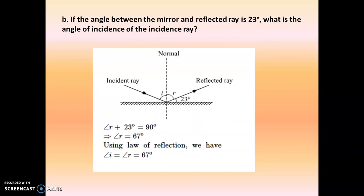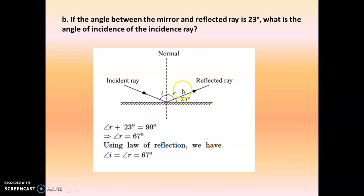Again: if the angle between the mirror and the reflected ray is 23 degrees, what is the angle of incidence? This angle is given as 23 degrees. The big angle — made up of the two small angles — is 90 degrees. One angle is given as 23 degrees, so 90 minus 23 equals 67 degrees. Therefore, using the law of reflection, the angle of incidence and the angle of reflection are both 67 degrees.